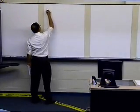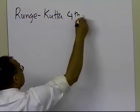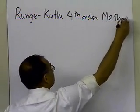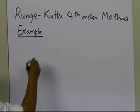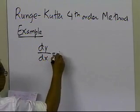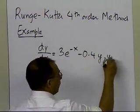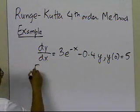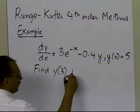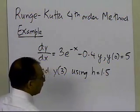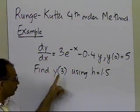In this segment, we will solve an example for the Runge-Kutta fourth-order method. We have taken the same example used for other methods of solving ordinary differential equations. The problem states: given dy/dx equals 3e to the power minus x, minus 0.4 times y, with initial condition y(0) equal to 5. Find y sub 3 using a step size h equal to 1.5, which means taking two steps from 0 to 1.5 to 3.